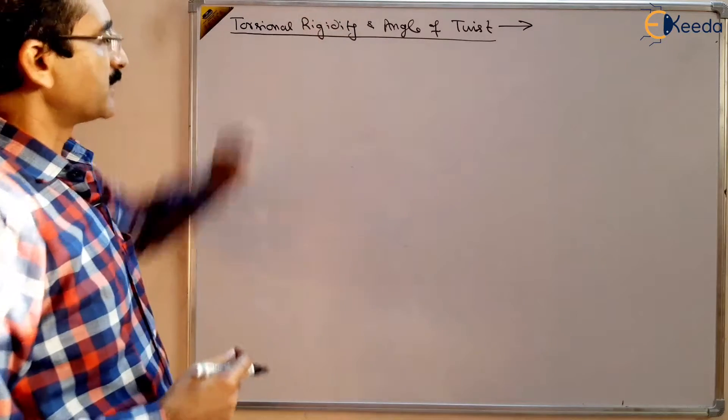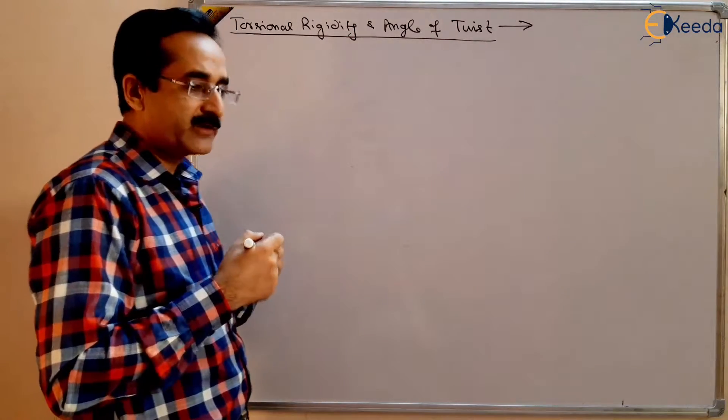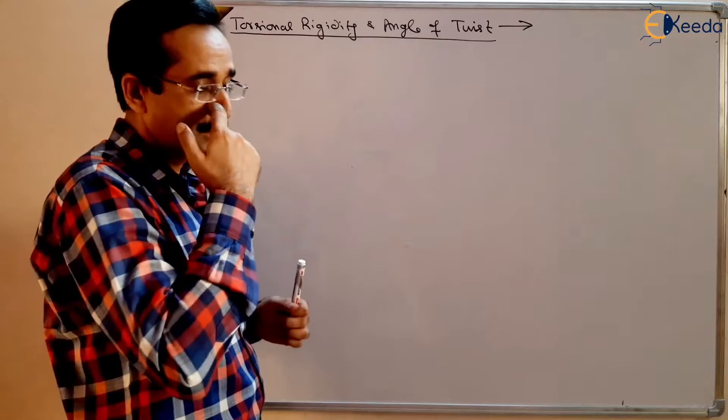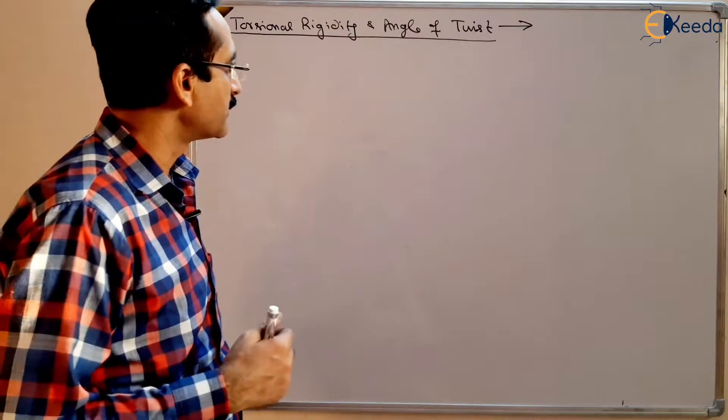What do you mean by rigidity? Something is rigid means it is very difficult to mold something, very difficult to twist something. That is torsional rigidity.